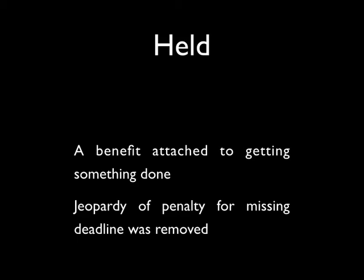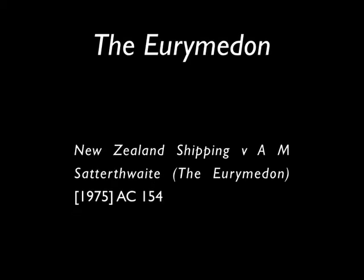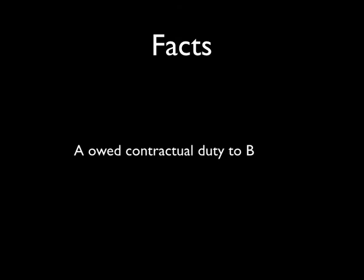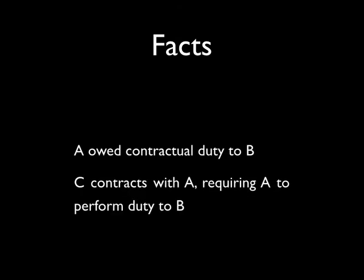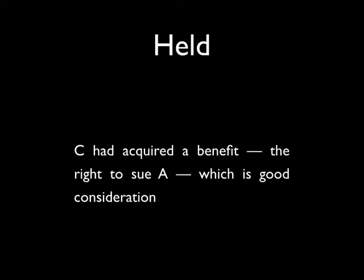A similar approach has been taken in a recent case to do with a duty owed to a third party, in the case of The Eurymedon. In that case, A owed a contractual duty to B. C entered into a contract with A, under which A was required to perform its duty to B. Under the Stilk v Myrick principle, as A already owed a duty to B, no fresh consideration would be found to have flowed from A to C, and so there would be no enforceable contract. However, the court found that in entering into the contract, C had acquired a benefit — a right to sue A if A did not perform its duty to B — and this accrual of the right to enforce was, in itself, good consideration.